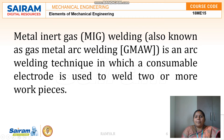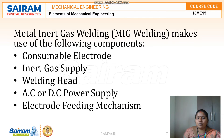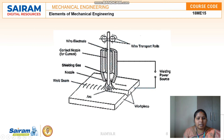The next type is Metal Inert Gas welding, also known as Gas Metal Arc Welding. It is an arc welding technique in which a consumable electrode is used, unlike TIG welding which uses a non-consumable electrode. The parts required are a consumable electrode, inert gas supply, welding head, AC or DC power supply, and an electrode feeding mechanism, since the consumable electrode must be continuously fed.